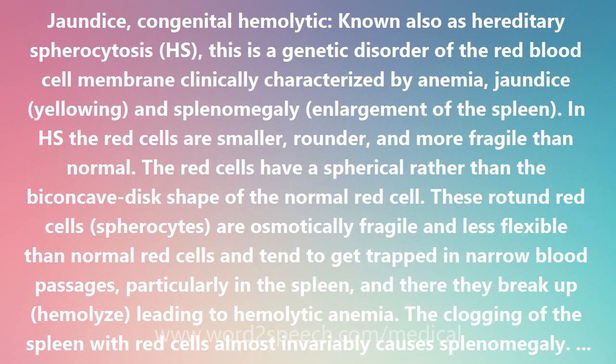Hereditary spherocytosis is most common in people of northern European ancestry. It often shows up in infancy or early childhood, causing anemia and jaundice. The bone marrow has to work extra hard to make more red cells. So, if in the course of an ordinary viral illness the bone marrow stops making red cells, the anemia can quickly become profound. This is termed an aplastic crisis.